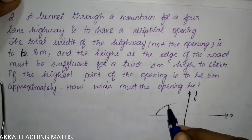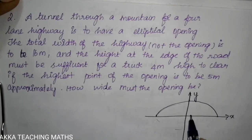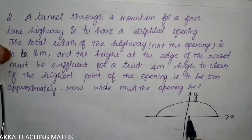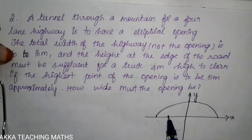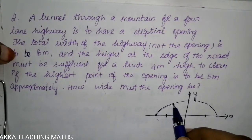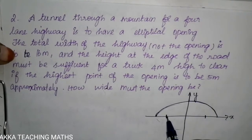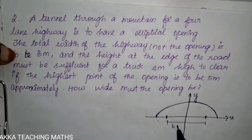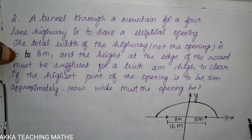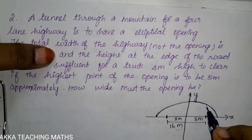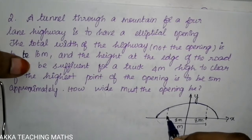The tunnel looks like this — I'm going to draw half the tunnel. The total width of the highway is 16 meters, so the opening of the highway is 16 meters. The road starts here; this width is 16 meters. So 16 meters means this side is 8 meters.